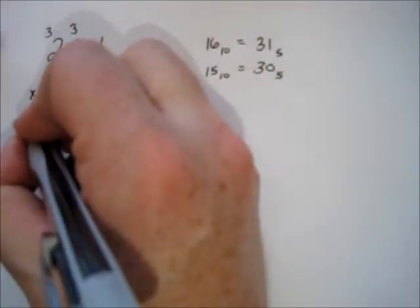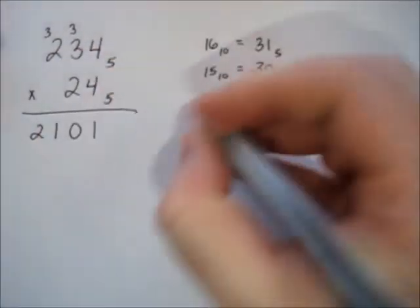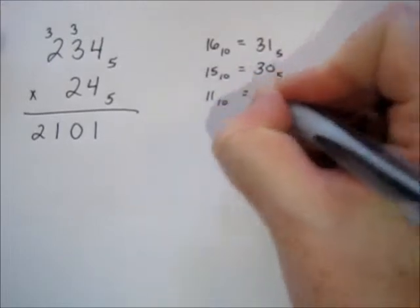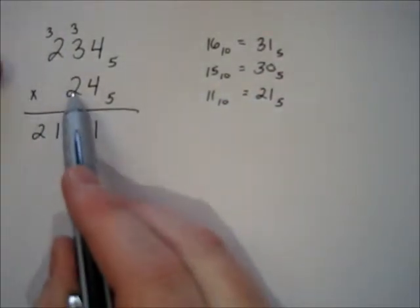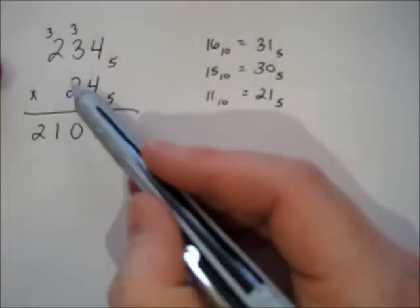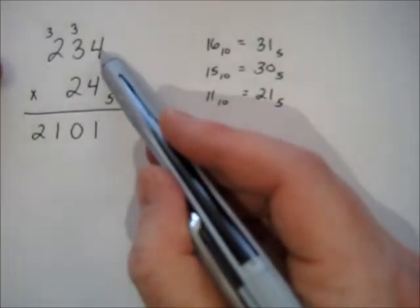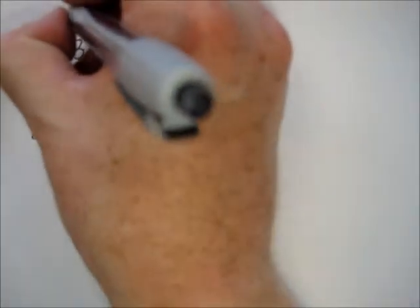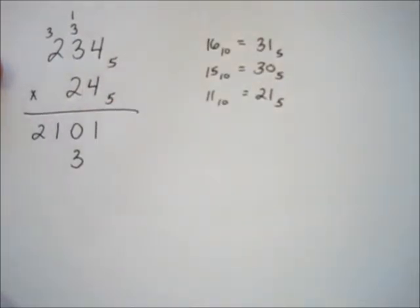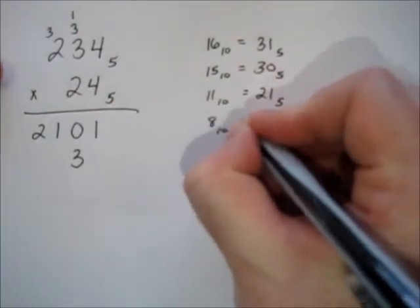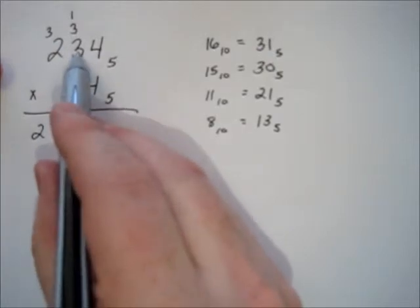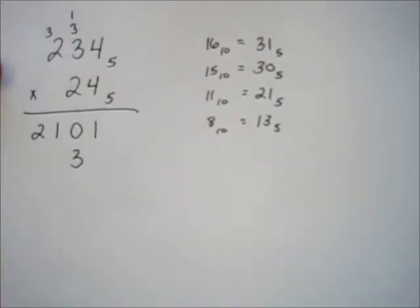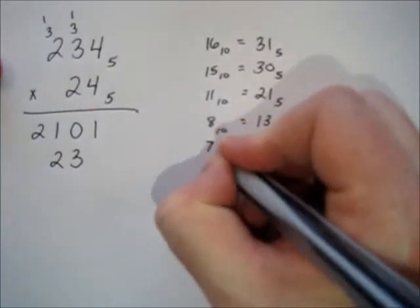How do you represent eleven in base five? It's two fives and one left over. Then we move to the two and do the multiplication all over again. Two times four is eight — if you're in base five, that's one five and three left over. Two times three is six, plus the one we just carried is seven, which is one five and two left over.